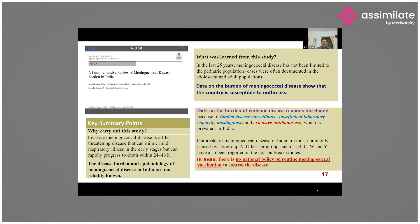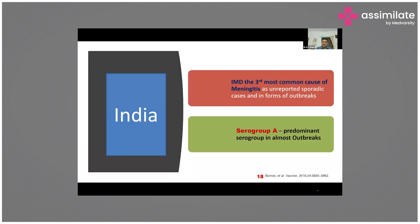India has no national policy on routine meningococcal vaccination for disease control. In summary, the Indian scenario shows meningococcal disease as the third most common cause of meningitis, with unreported sporadic cases and occasional outbreaks, with serogroup A as the most common predominant serogroup.